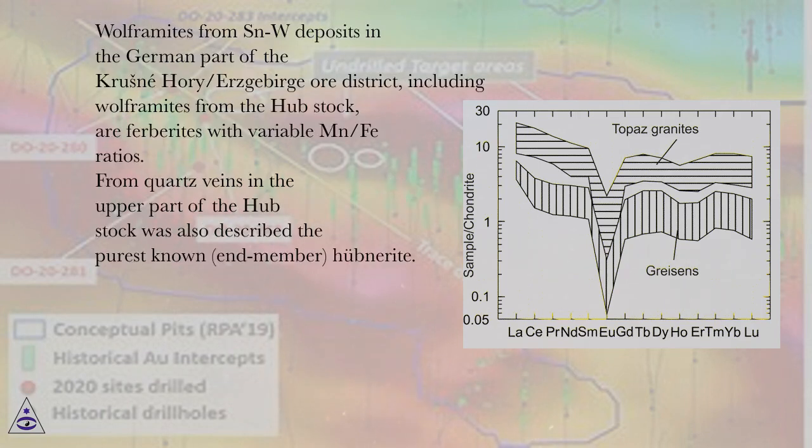Wolframites from SnW ore deposits in the German part of the Krusne hory/Erzgebirge ore district, including wolframites from the Hubstock, are ferberites with variable Mn/Fe ratios.